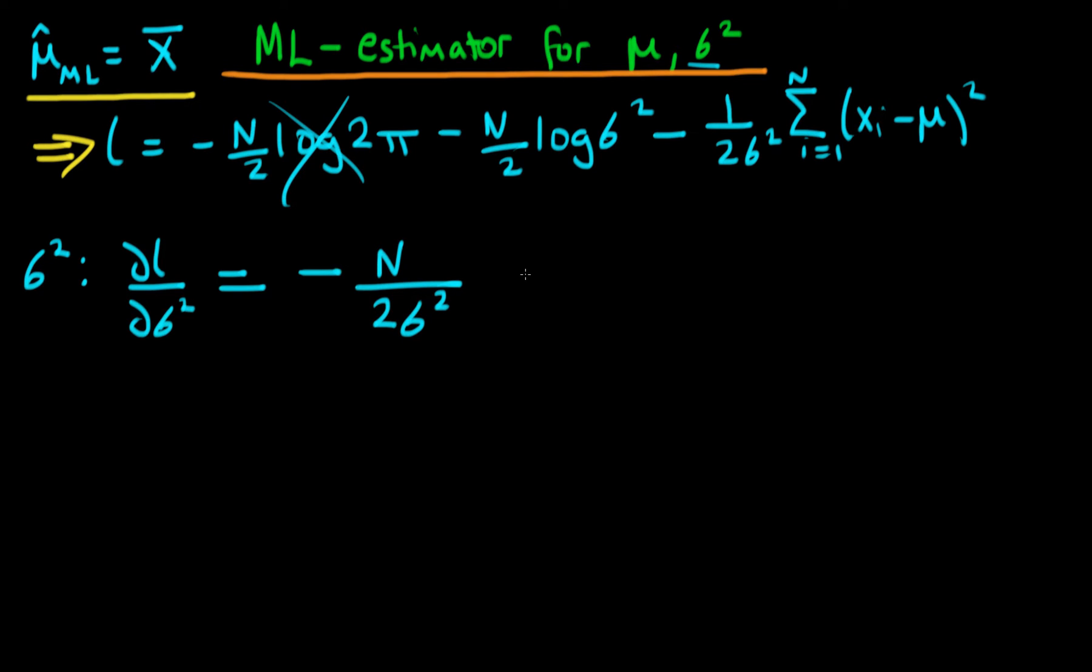And then this final term here is going to yield 1 over 2 times sigma to the power 4 of the sum from i equals 1 to N of xi minus mu squared.